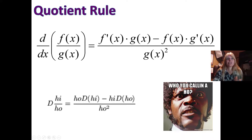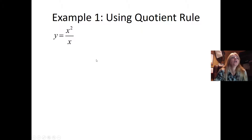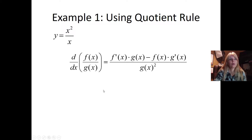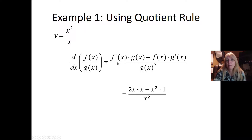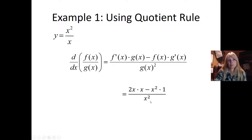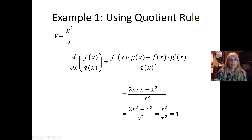Just like the product rule, I have a formula I'm going to use. We just did the one where we straight divided, and you wouldn't normally use the quotient rule there, but to prove we get one, let's plug everything in. Take the derivative of the top — derivative of x squared is 2x — leave the bottom alone, x, minus leave the top alone, x squared, times the derivative of the bottom. The derivative of x is just one. Then square the bottom, x squared. So 2x times x is 2x squared, x squared times 1 is x squared — 2x squared minus x squared, that's x squared, over x squared. We get the same answer: equals 1.